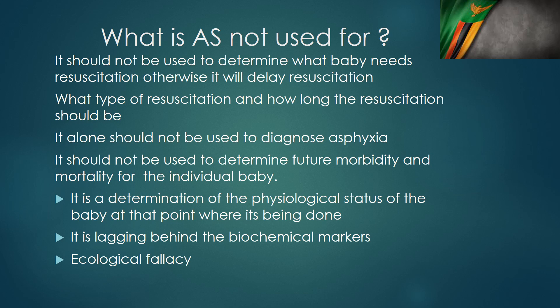You cannot use the APGAR score to predict future morbidity and mortality of an individual baby. You can't say this baby's APGAR score is three so it won't do well in the future. At population level we can say most babies with a low APGAR score below seven or below three don't do well, but we cannot apply that to a particular baby. That is what is called an ecological fallacy — you can't use a population study to determine what happens to an individual. Some babies with low APGAR scores are doing very well out there.